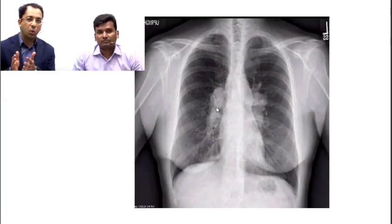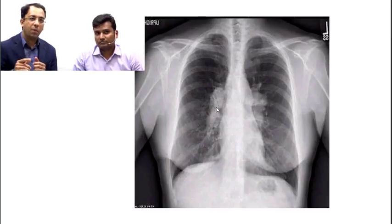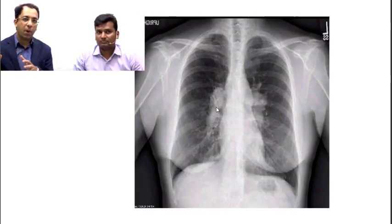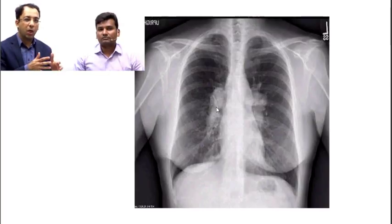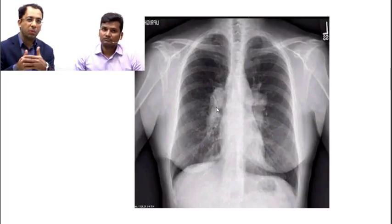Hilar lymphadenopathy can be seen in tubercular infection, but in TB it is usually unilateral or, if bilateral, usually asymmetric. Here we are seeing bilaterally symmetric hilar lymphadenopathy, which is a key distinguishing point.